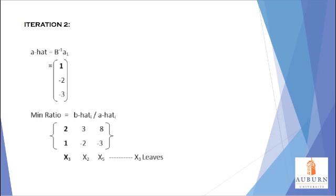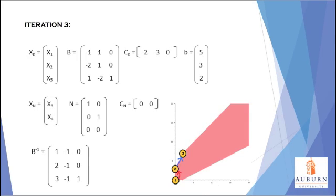We need to update the changes with X1 entering the basis and X3 leaving the basis. X1 is now in the first row of the XB matrix where X3 used to be, and X3 is in the first row of the XN matrix where X1 used to be. The first column of the B matrix is updated with the column vector from the A matrix associated with X1, while the first column of the N matrix is updated with the column vector associated with X3. The first columns of the CB and CN matrices are updated with the cost coefficients for X1 and X3 respectively.